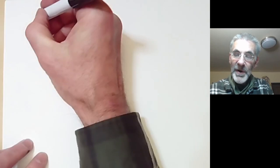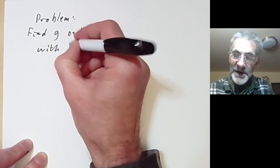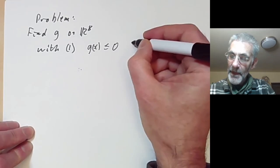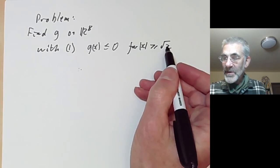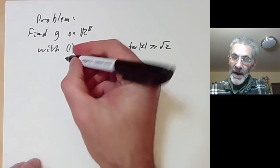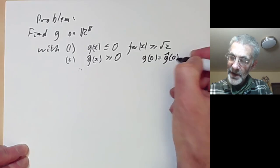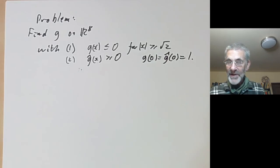It was like that for several years until Marina Viazovska managed to find this completely amazing solution. So the problem: we want to find a function g on R8 such that first, g(x) ≤ 0 for |x| ≥ √2 (since the E8 lattice has minimal norm √2, requiring a slight renormalization of the Cohn-Elkies result), and second, ĝ(x) ≥ 0, and third, g(0) = ĝ(0) = 1.